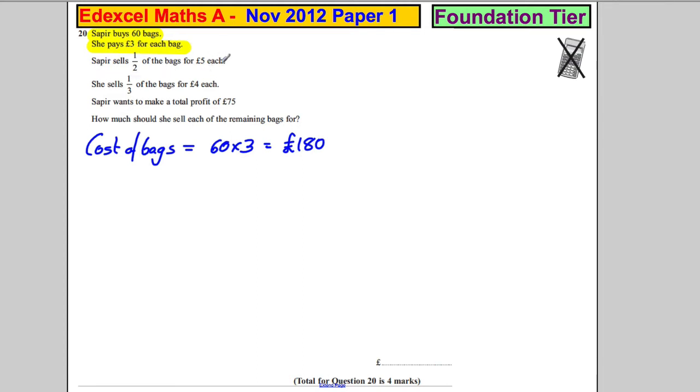Sapir sells half of the bags for five pounds each. Sales. The half, let's deal with that first. She sells half of the bags, so she sells 30 bags for five pounds each, which is 150 pounds.